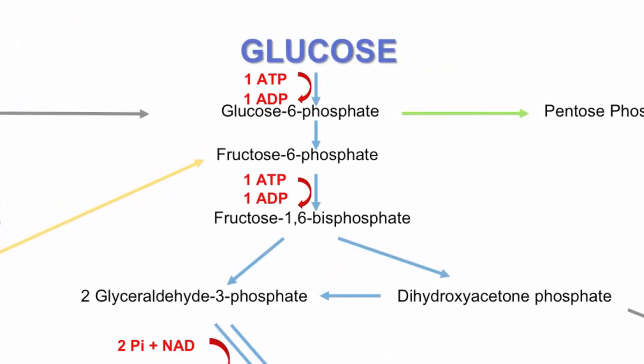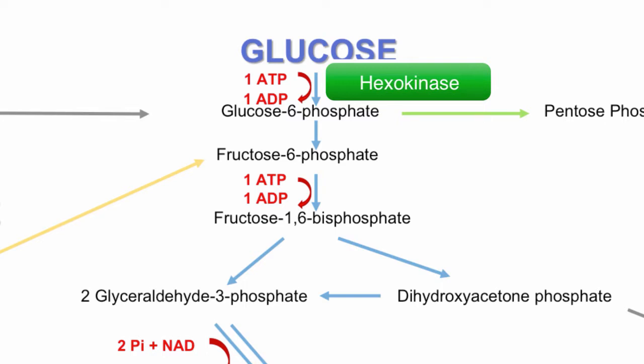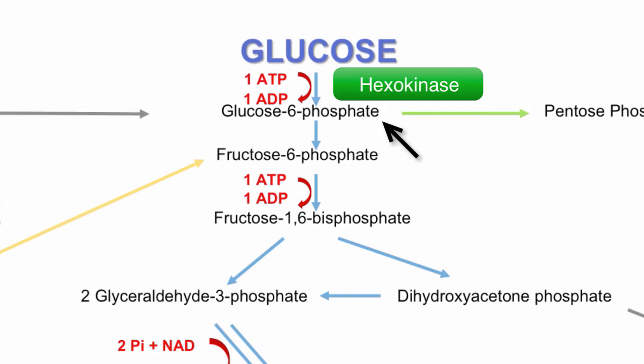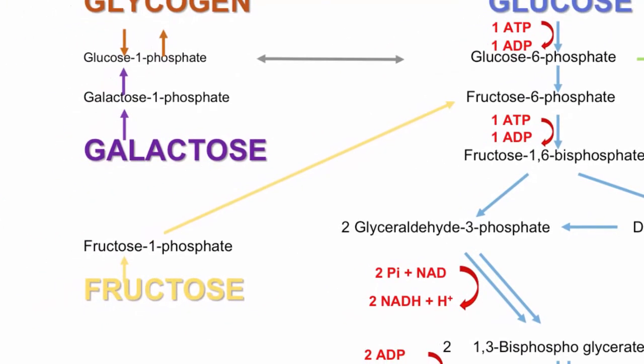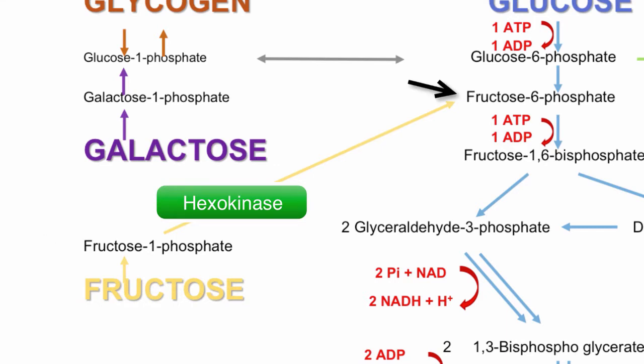The first enzyme we are going to talk about is hexokinase — either spelling or pronunciation is correct. What is important about hexokinase is that it is used in two different reactions within our diagram. The first reaction is the breaking down of glucose into glucose 6-phosphate. The second place that it is used is the conversion of fructose 1-phosphate to fructose 6-phosphate.